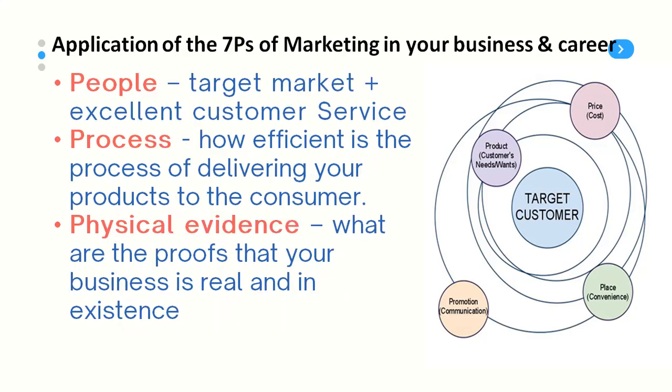Number five is People — target market plus excellent customer service. Without people, visions perish; without products, people may never get satisfied. You must strike a balance. Your target market must have excellent customer service — people attending to them must not make them feel they don't matter. The only people who can strike any employee, from the chairman to the gatekeeper, are the customers, simply by deciding to spend their money elsewhere.